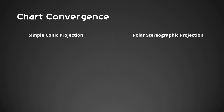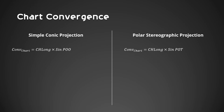We can use the conic formula for polar stereographic projection: polar stereographic chart convergence equals change of longitude multiplied by sine of the parallel of origin. Since polar stereographic projection is a variation of conical projection, the point of tangency is 90 degrees, and sine of 90 degrees is 1. Therefore, polar stereographic chart convergence is equal to the change of longitude.